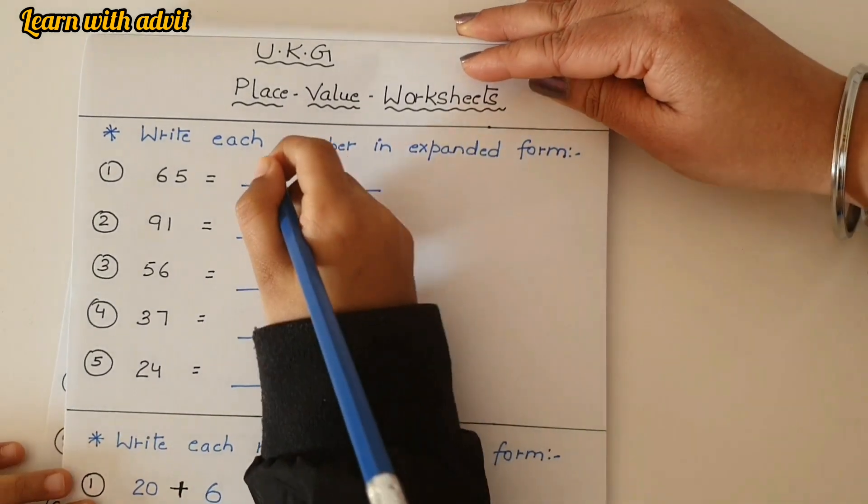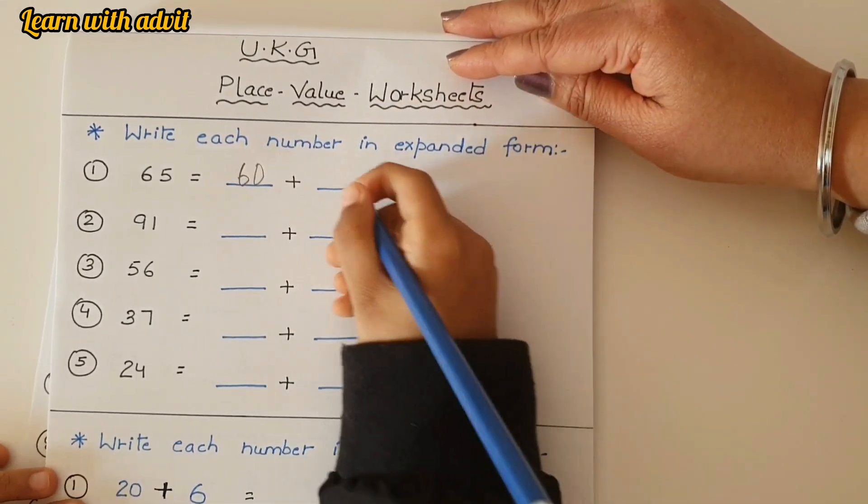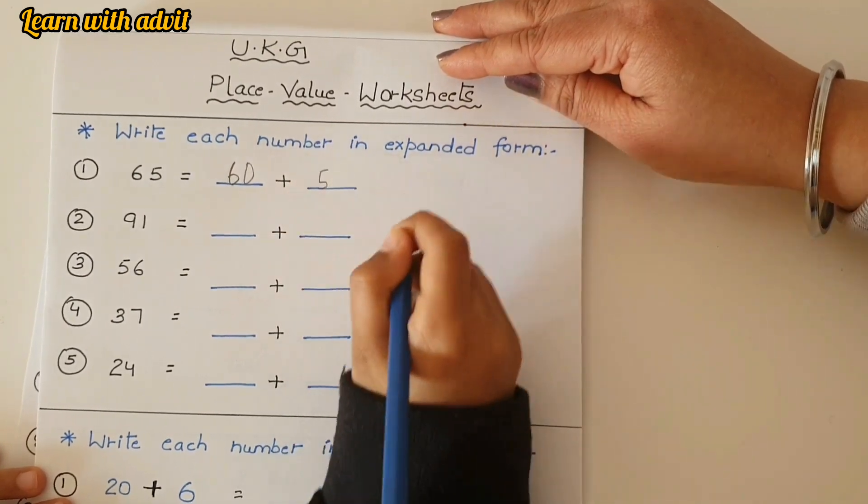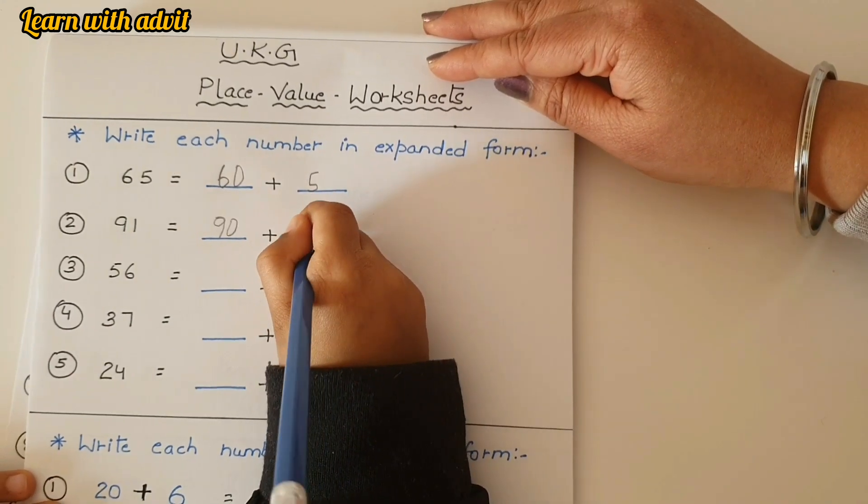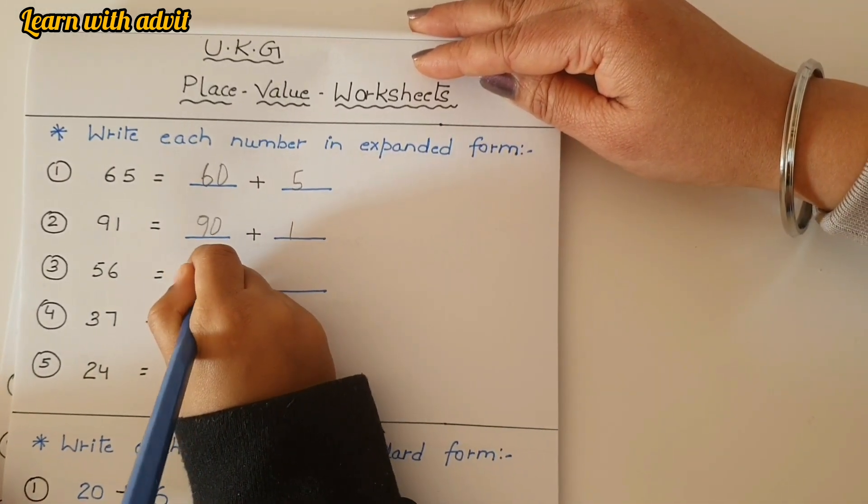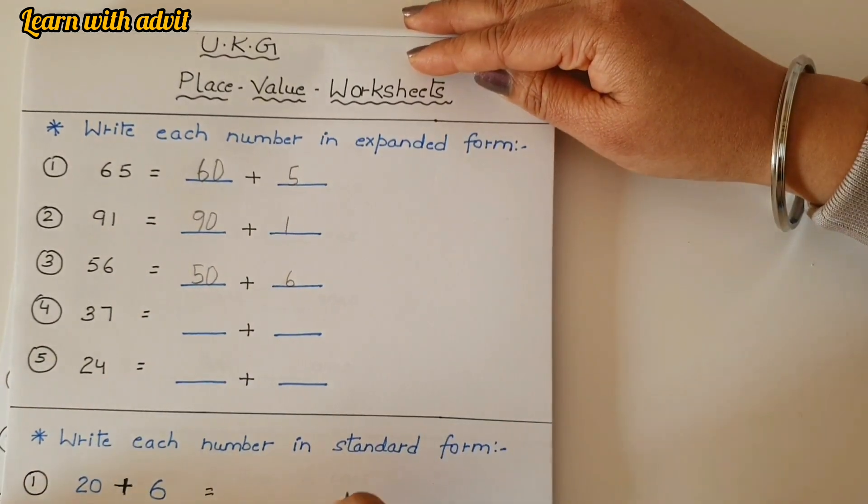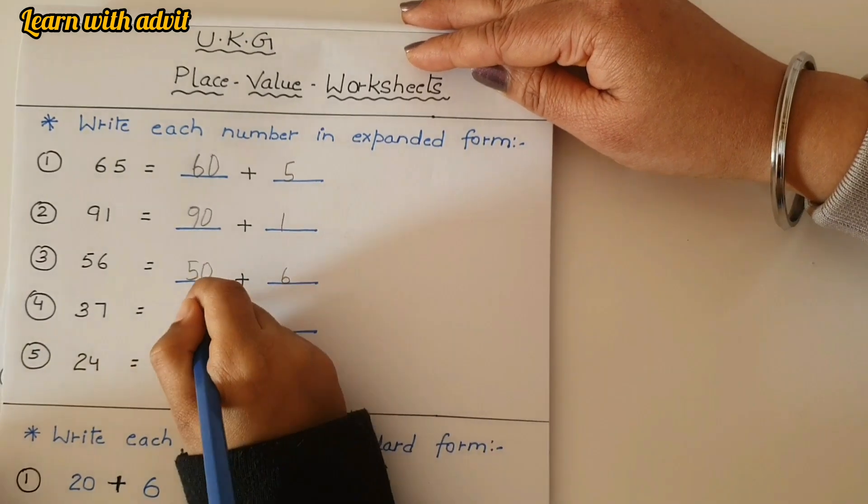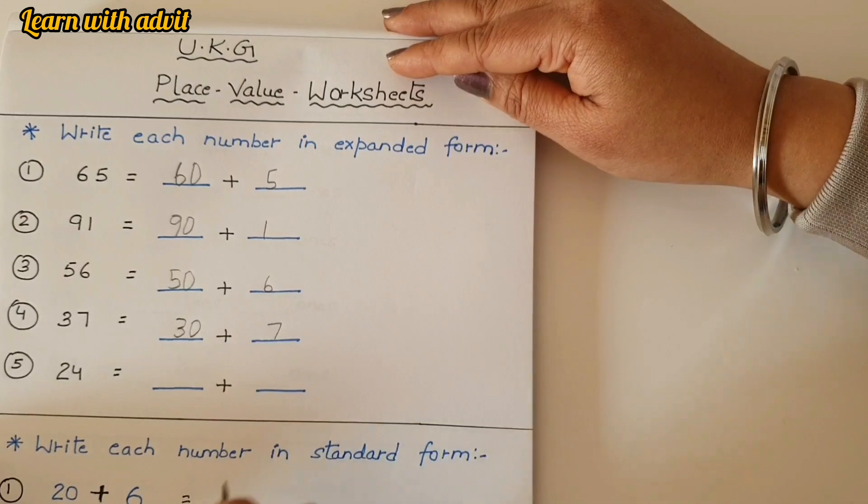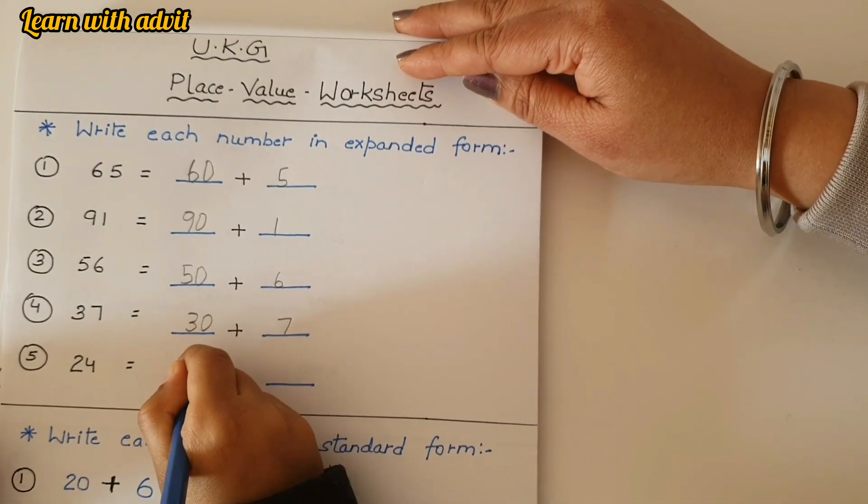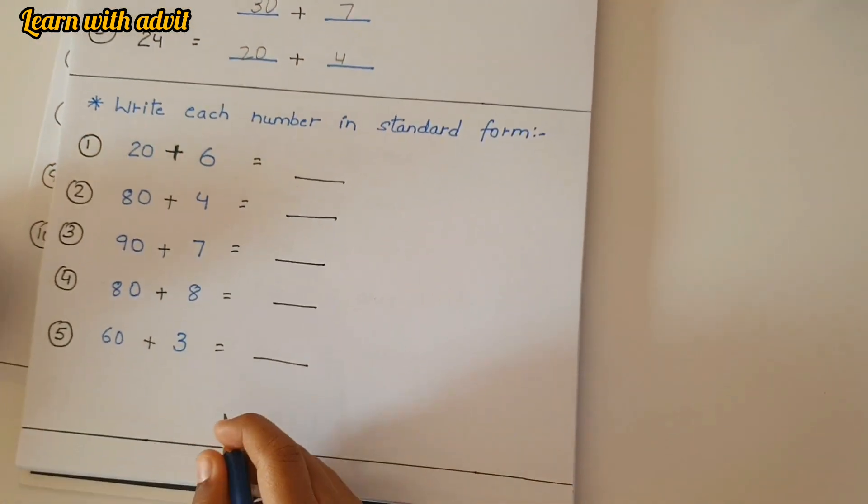It's a place value worksheet. Okay. Write each number in expanded form. 65, you'll write as 60 plus 5. 91, 90 plus 1. 56, 50 plus 6. 37, 30 and 7. 24, 20 and 4.